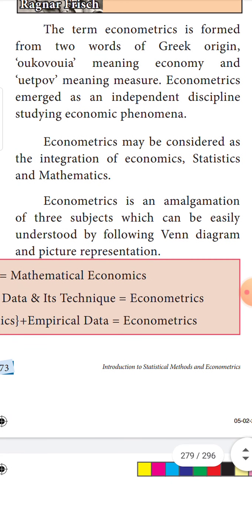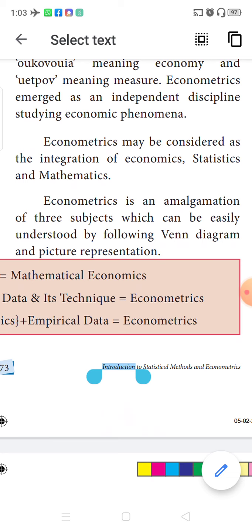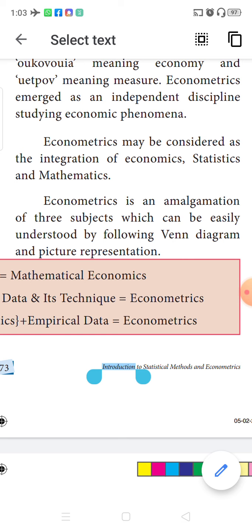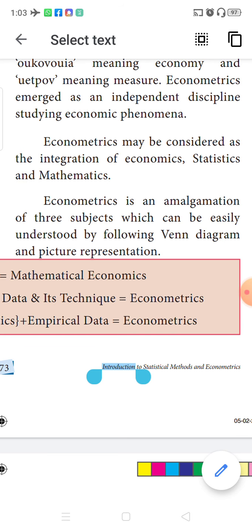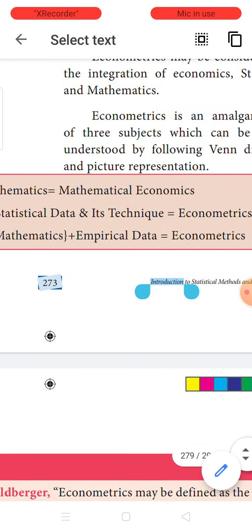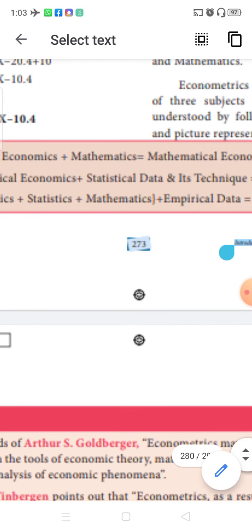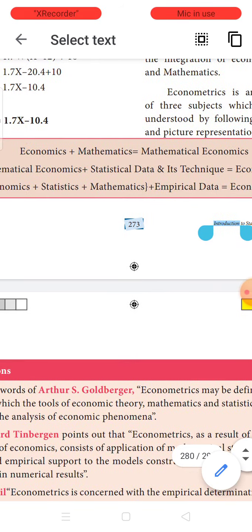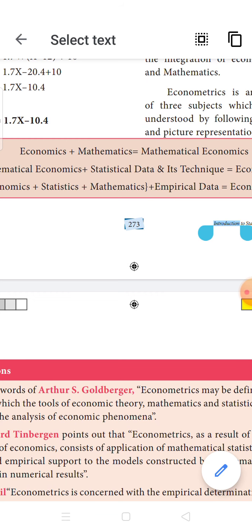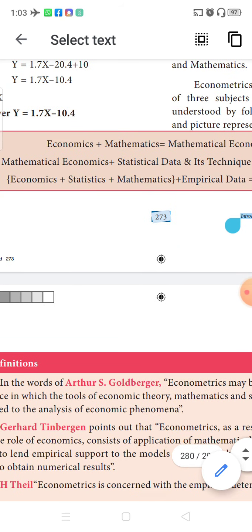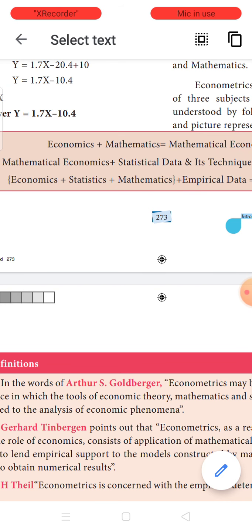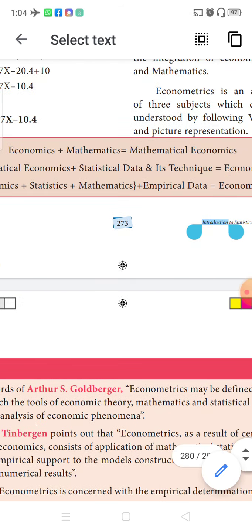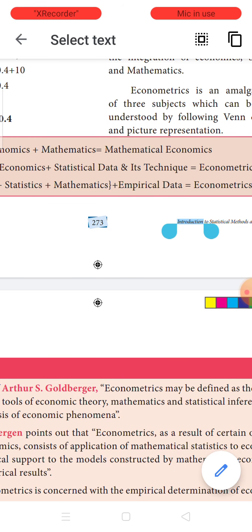Econometrics can be considered as an integration — an amalgamation of three subjects: economics, statistics, and mathematics. This can be easily understood with a Venn diagram. Mathematical economics is a combination of economics and mathematics. Econometrics has a combination of mathematical economics plus statistical data and all the techniques used in statistical analysis.